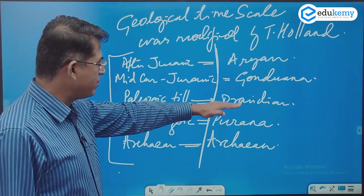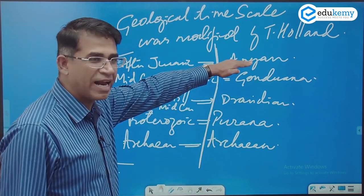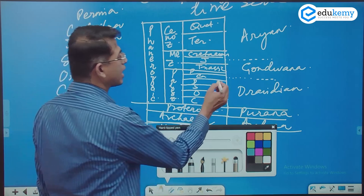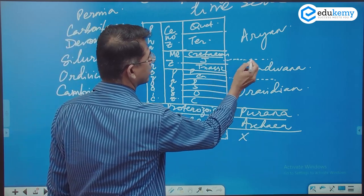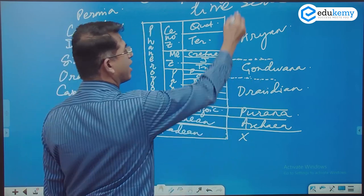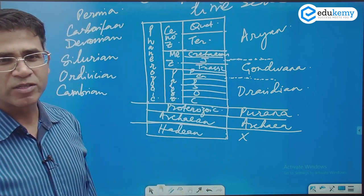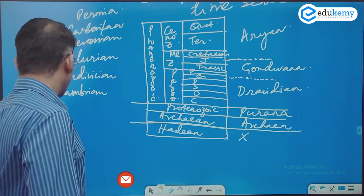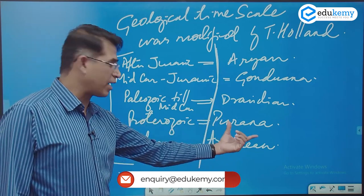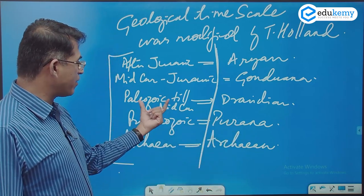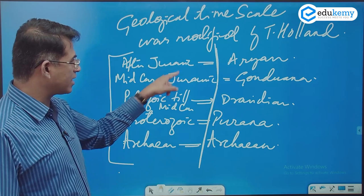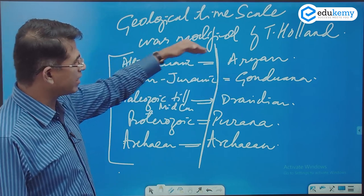So, to summarize: Archean times, Purana times, Dravidian times, Gondwana times, and Aryan times. Diagrammatically: till about mid-Carboniferous is Dravidian times, mid-Carboniferous to mid-Jurassic is Gondwana times, and thereafter it is Aryan times. Proterozoic is Purana, Paleozoic to mid-Carboniferous is Dravidian, mid-Carboniferous to mid-Jurassic is Gondwana, and after mid-Jurassic is Aryan.